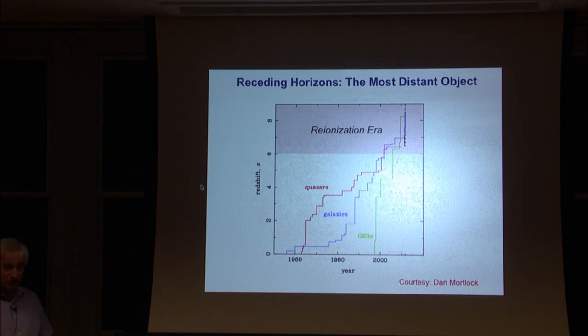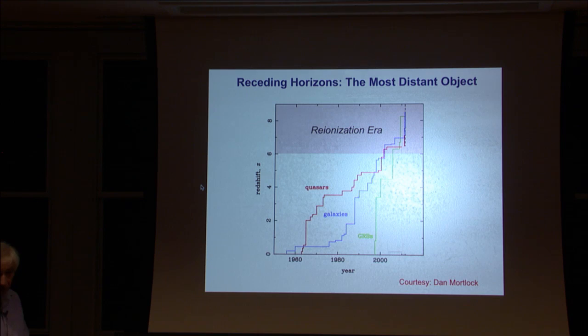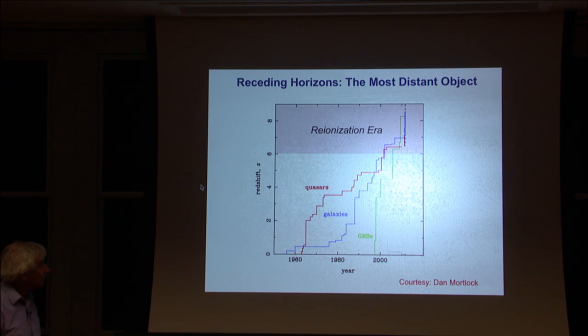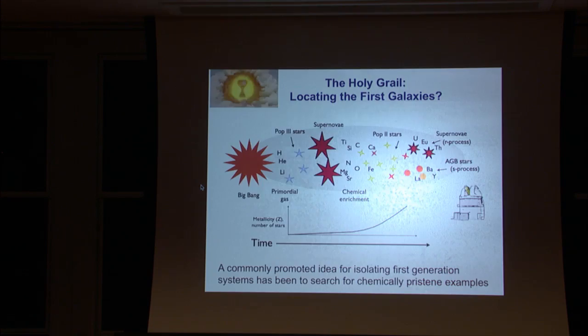Then along came these gamma-ray bursts, very exciting objects, extraordinarily luminous, of course difficult to follow up quickly, and they have pushed out to redshifts of 8. Quasars now more or less flattened out at the redshift of 7. So this period is now observationally accessible. That's the main point of this slide.